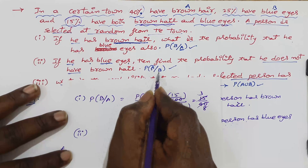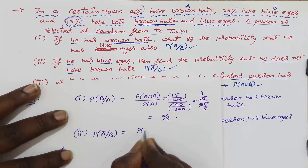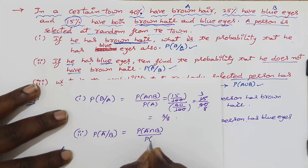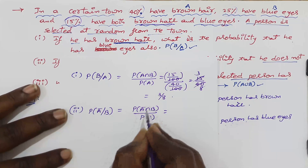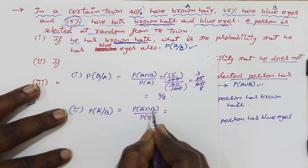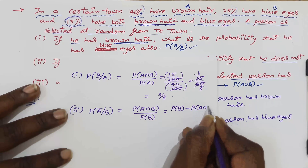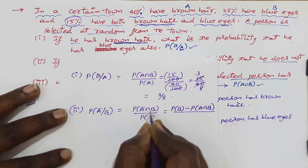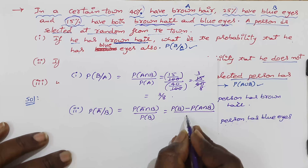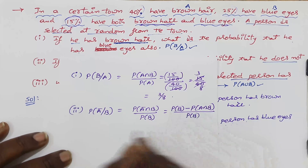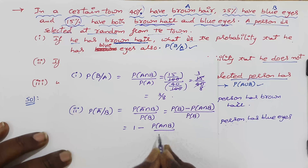For the second part, we find P(Ā|B). By the definition of conditional probability: P(Ā|B) = P(Ā∩B) / P(B). Since Ā∩B has no complementary directly, we use P(Ā∩B) = P(B) − P(A∩B), which gives P(Ā|B) = 1 − P(A∩B)/P(B).